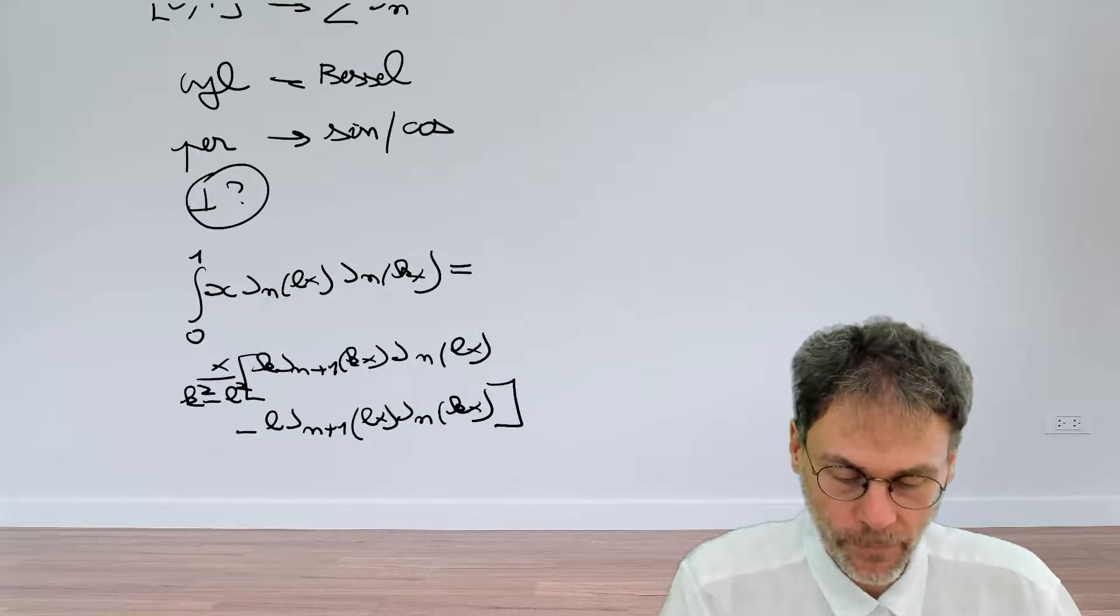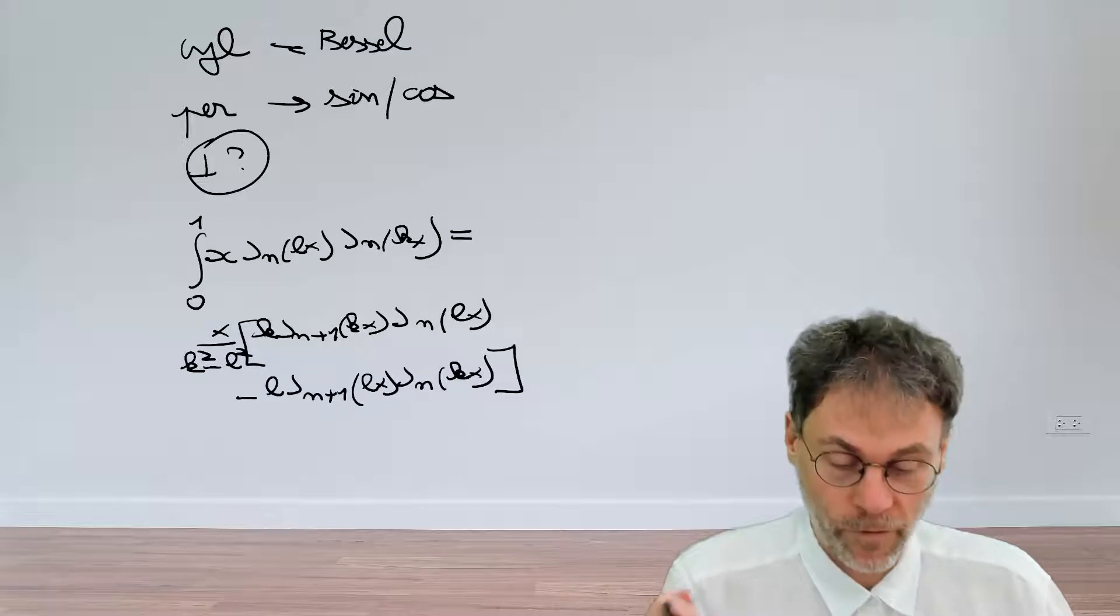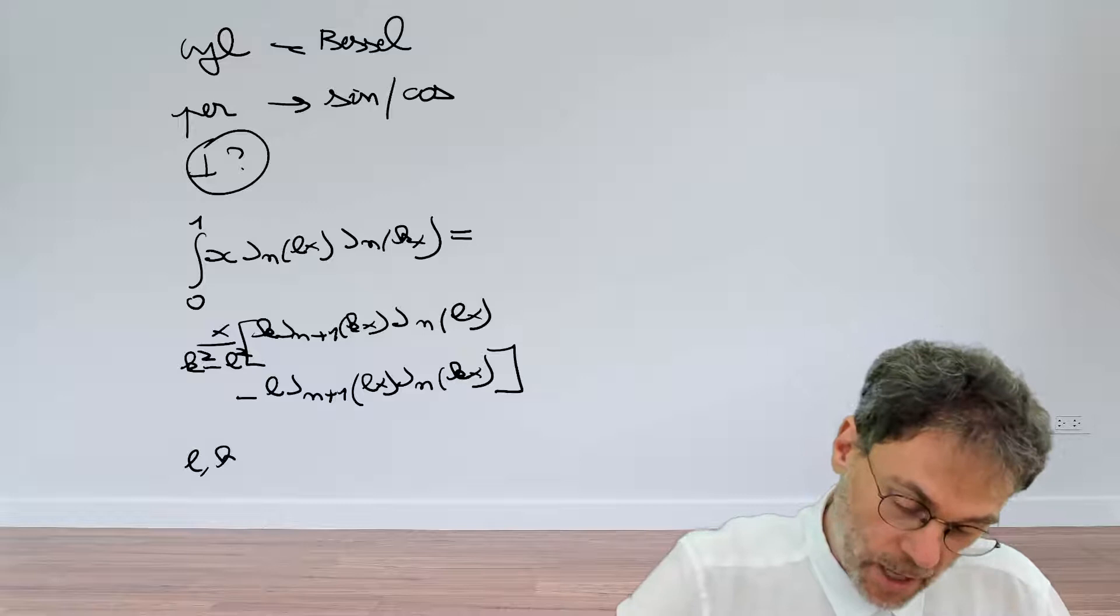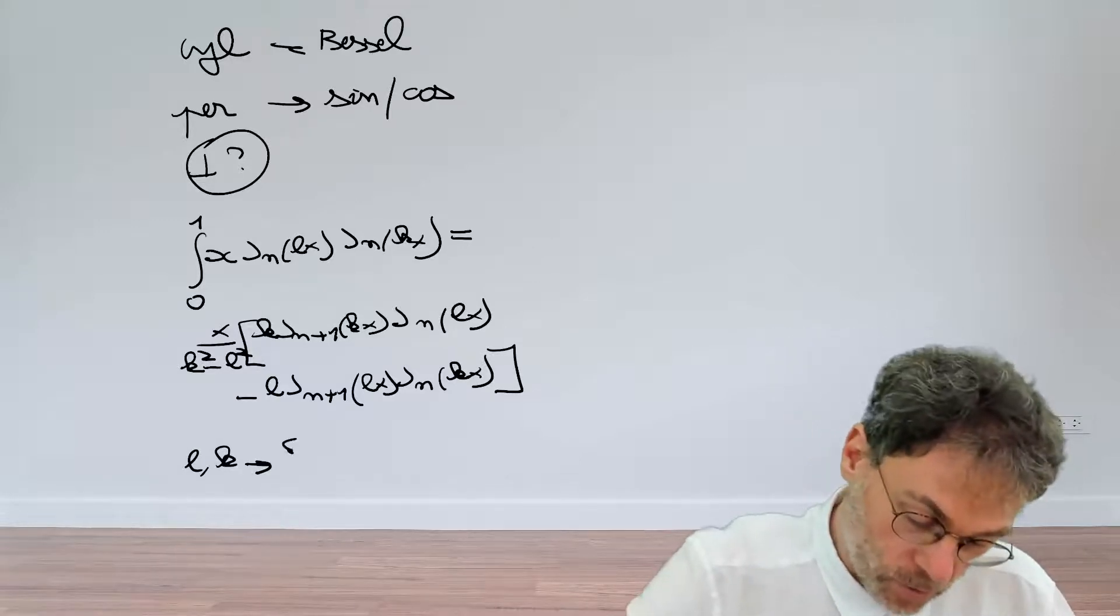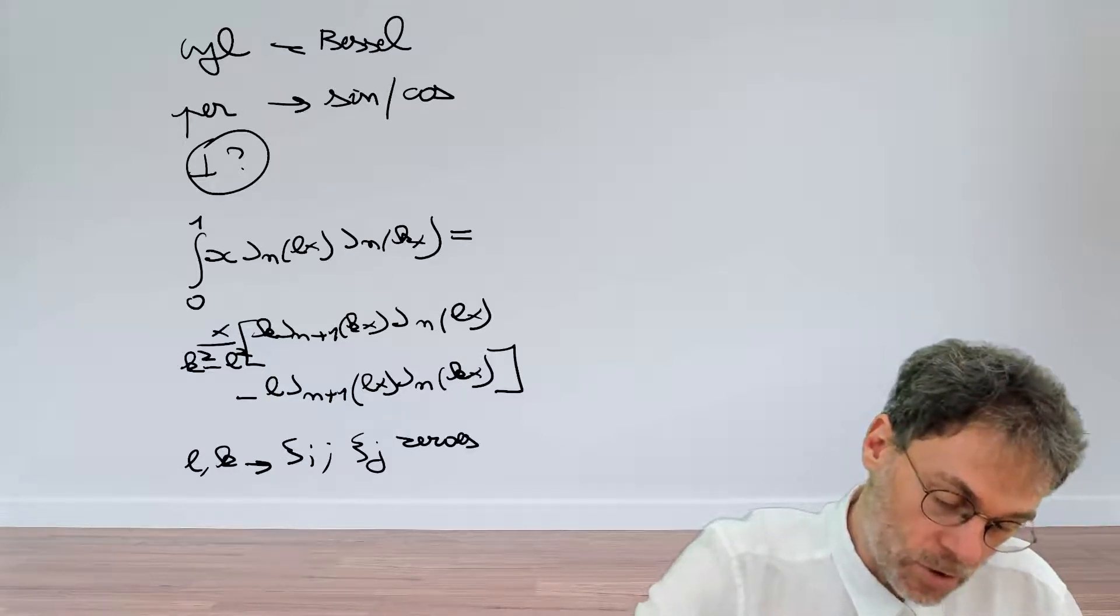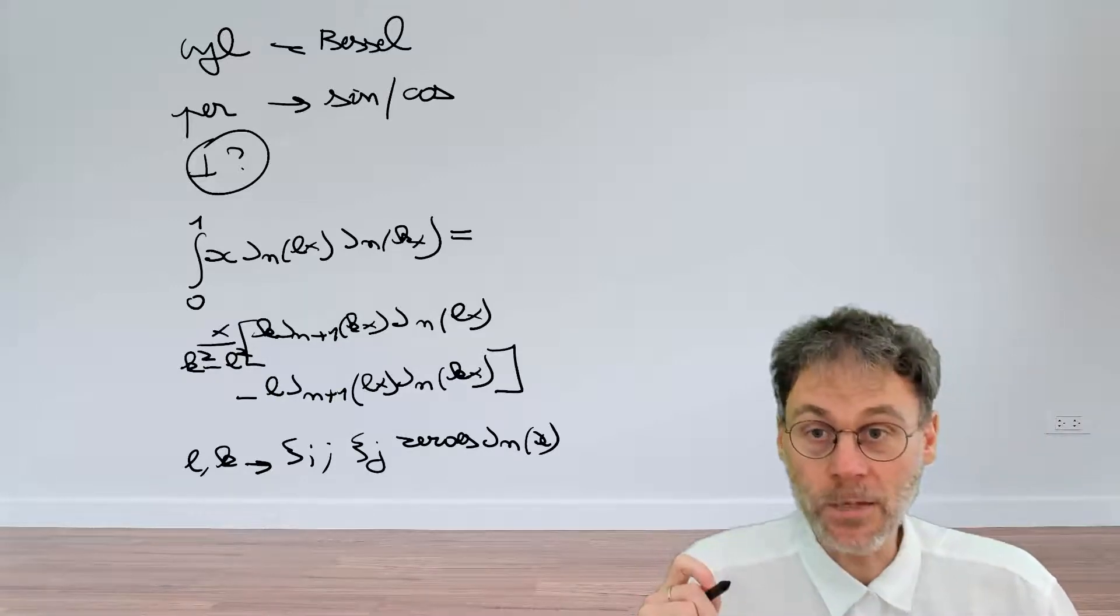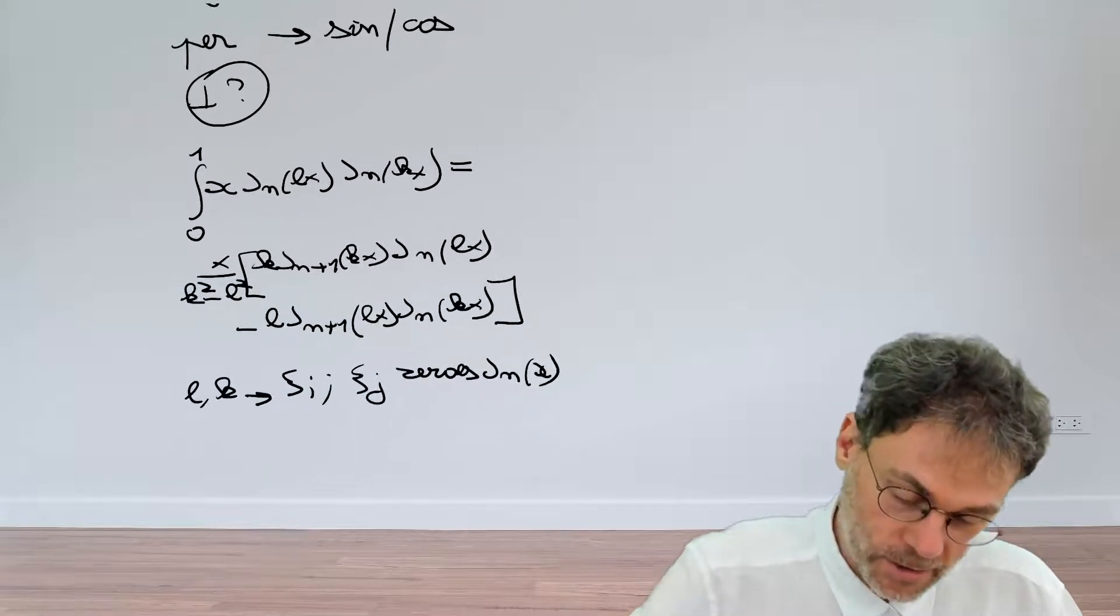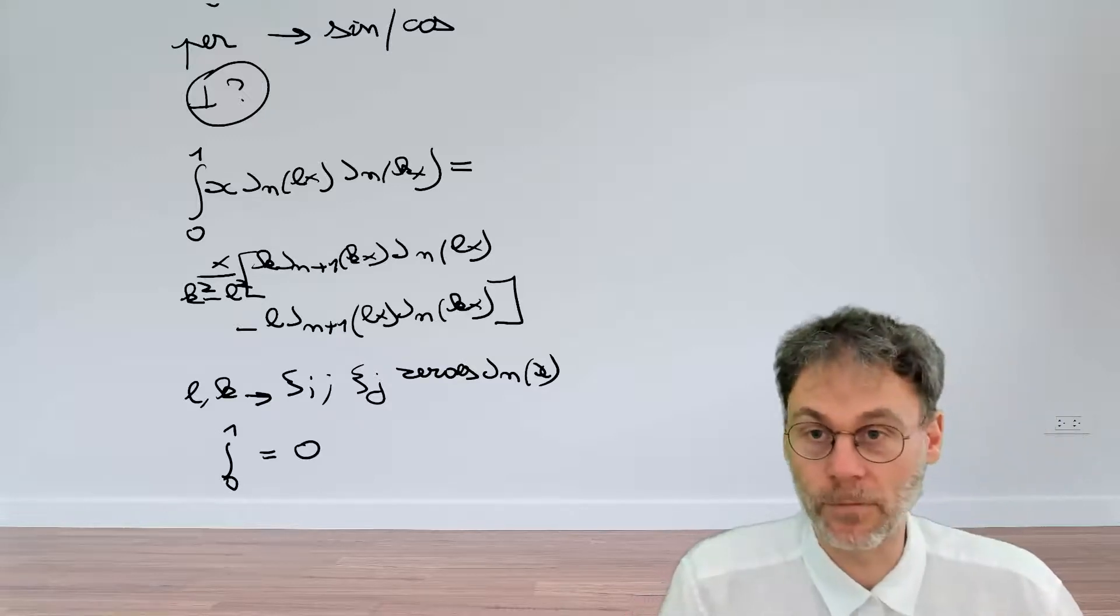This is what we've derived in a previous video. Now let's have a look at what happens for the very specific choice of l and k. Let's say that for l and k we're going to take two zeros of the Bessel function of order n, and we're going to call them ξ_i and ξ_j. So they will be zeros of the Bessel function of order n. If you make this particular choice for l and k, you can easily verify that the integral that we've written here will be equal to zero.